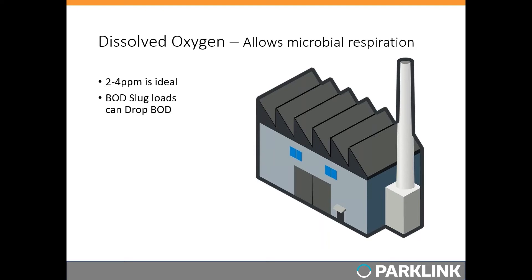Another way dissolved oxygen becomes an issue is a short-term drop related to a slug load of high-strength, soluble, easily utilized BOD. Heterotrophic bacteria use those high-strength slug loads very quickly and have a high oxygen requirement, sucking out a lot of oxygen in a short period of time. If that low DO persists for 24 hours or more, it can definitely knock out a population of nitrifying bacteria. Some plants do well at lower than 2–4 ppm DO — that's just an ideal range for a typical activated sludge plant.